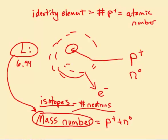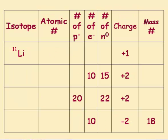So let's go back to this table. The last column we've got to figure out is charge. Charge is dictated not by changing protons — because that changes the identity of the element — but by changing the number of electrons.